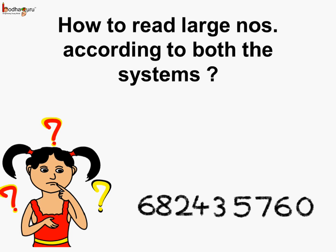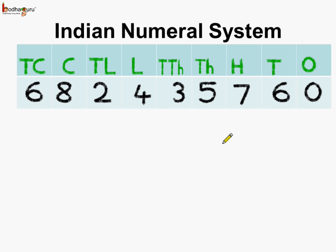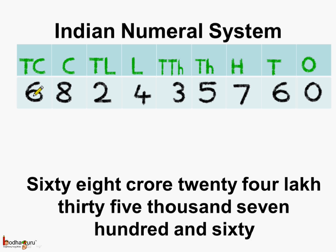Now, how to read large numbers according to both systems? We have a large number. Let us place it under the Indian numeral system place value chart. We get: zero ones, six tens, seven hundreds, five thousands, three ten-thousands, four lakhs, two ten-lakhs, eight crores, and six ten-crores. Reading from the highest value, this number becomes sixty-eight crores, twenty-four lakhs, thirty-five thousand, seven hundred and sixty.